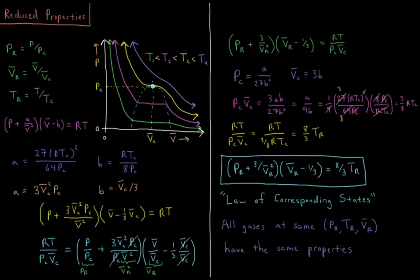At temperatures below the critical temperature, we have gas at high molar volumes, liquid at low molar volumes, and at intermediate molar volumes inside this blue parabola we have the liquefaction of the gas — going from 100% gas at high molar volume to 100% liquid at low molar volume at constant pressure. Above the critical temperature we don't have any liquid, and below it we have the phase transition from gas to liquid, which is captured using the van der Waals equation of state.